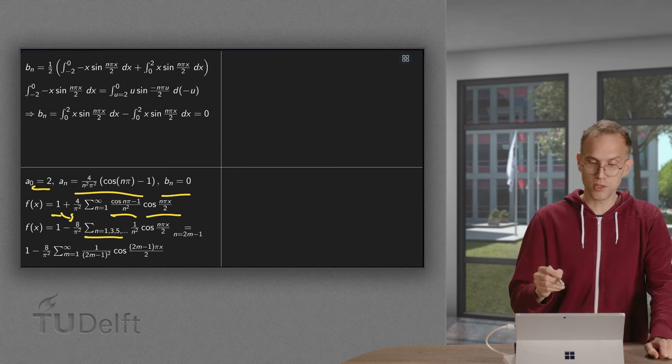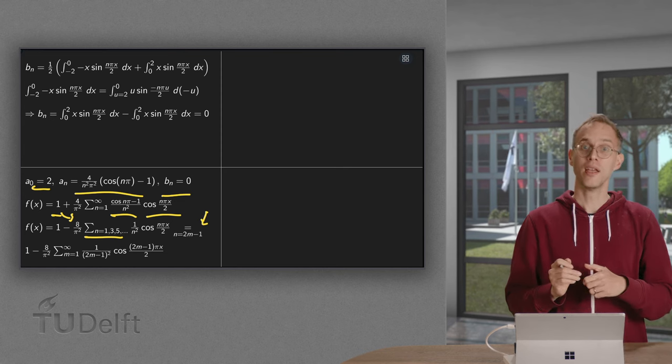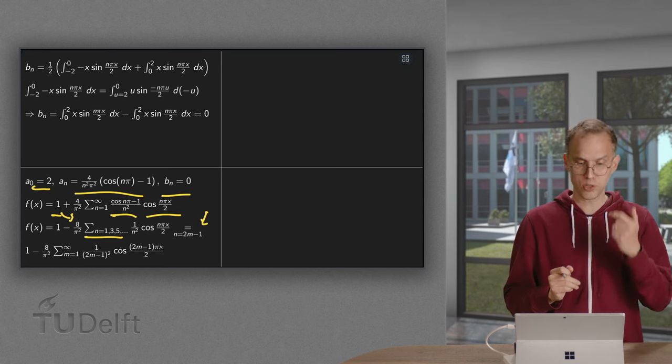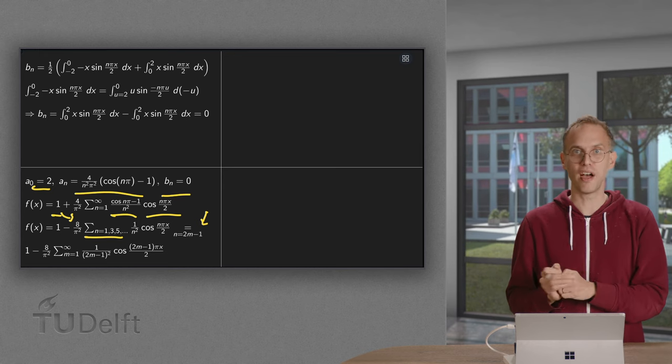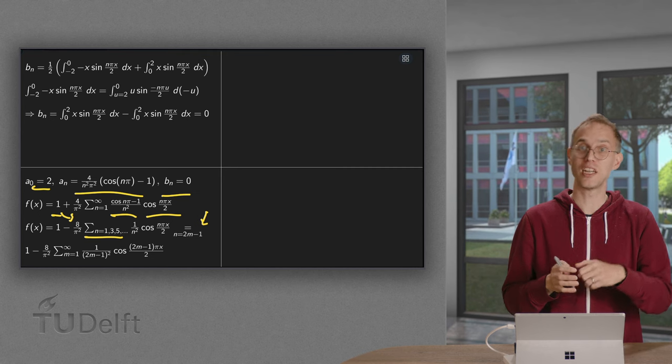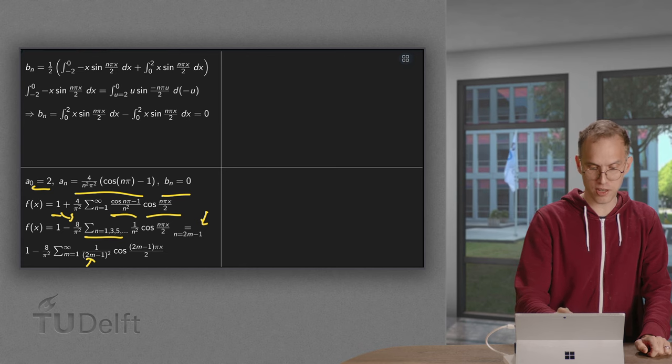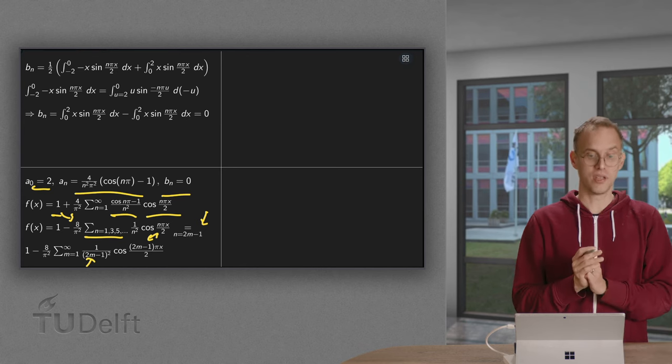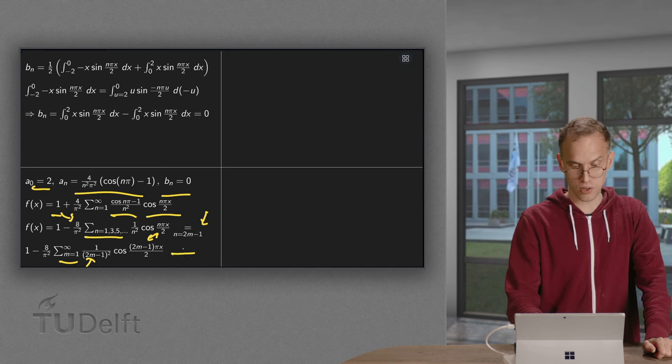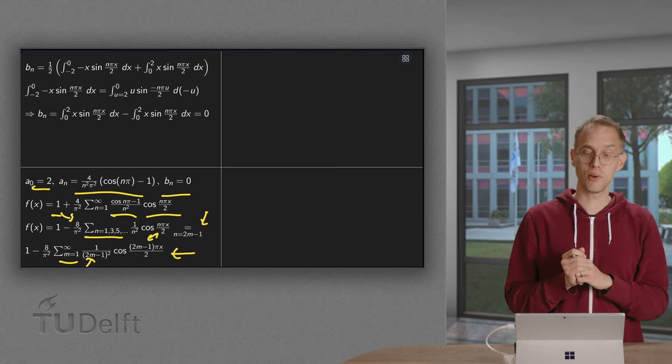Or what you can also do is say, I rename n equals 2m minus 1. Then if m runs from 1, 2, 3, and so on, n runs from 1, 3, 5, and so on. Then you can use a summation index m instead of n, and you replace n by 2m minus 1. And then your m runs from 1 up to infinity. This is also a valid final answer. You can use all three of them, whichever you like.